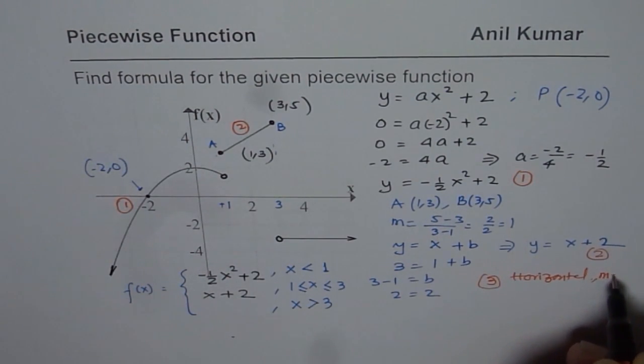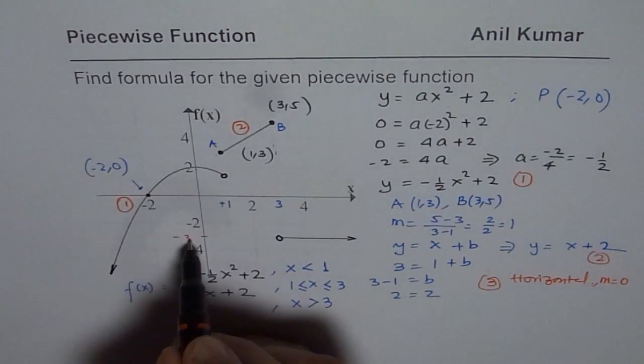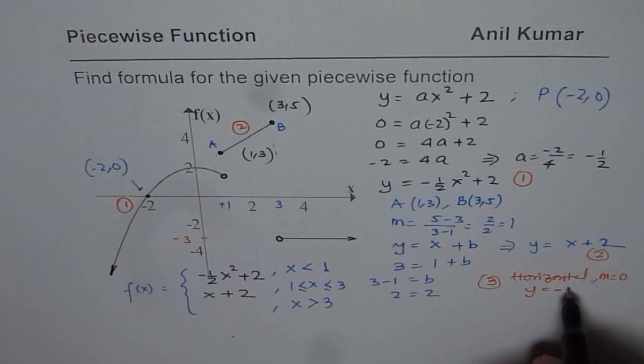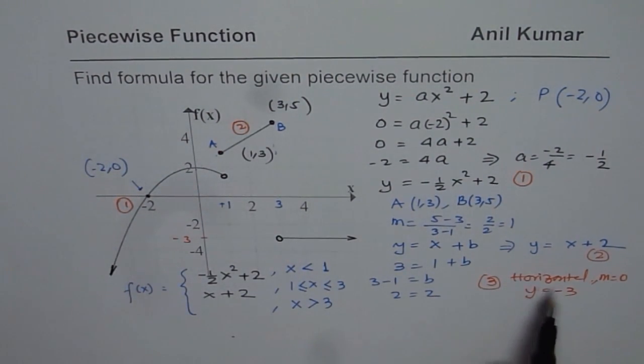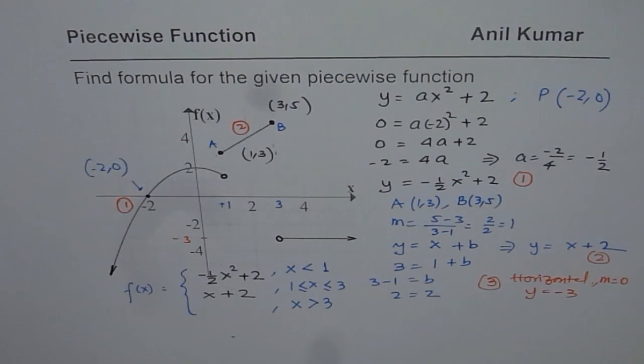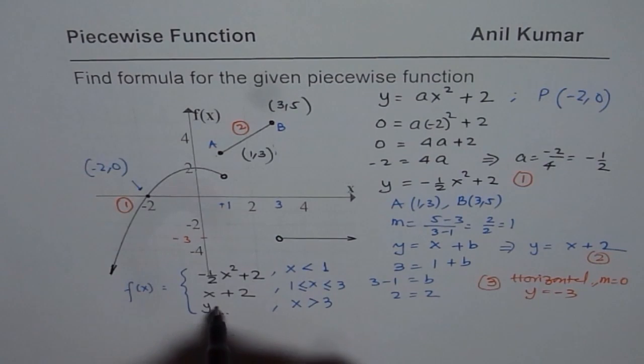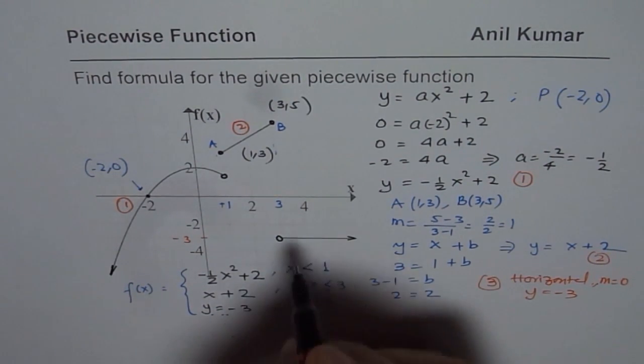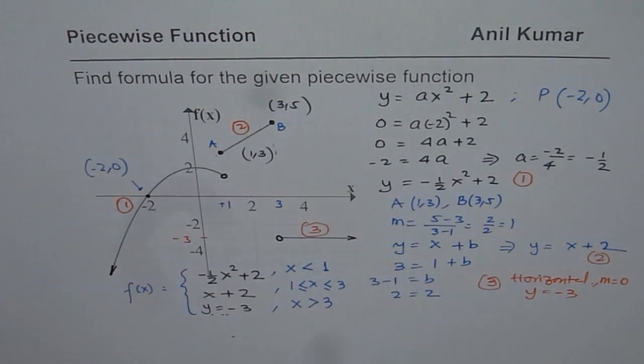That means slope m equals to 0 and y value here is minus 3. So y equals to minus 3 is the equation of this horizontal line. So we will replace, here we will write down y equals to minus 3 as third piece of this particular piecewise function.